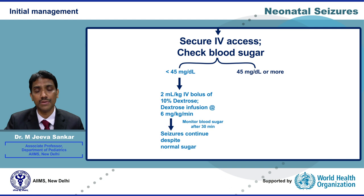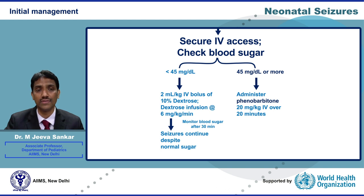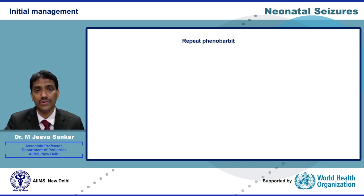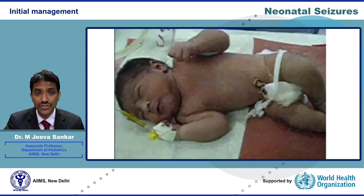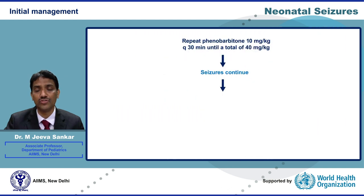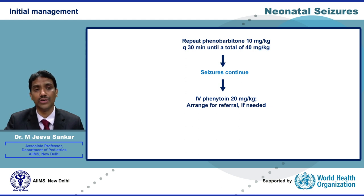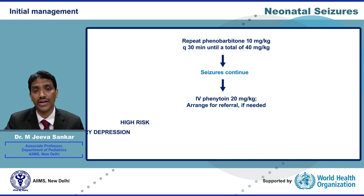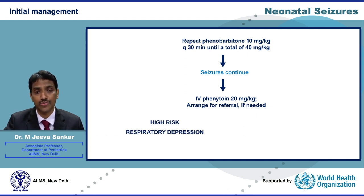If the initial blood glucose is more than 45 mg/dL or seizures continue after hypoglycemia is corrected, provide specific therapy with anti-epileptic drugs. The first-line anti-epileptic drug in neonates is phenobarbitone, administered as a bolus of 20 mg per kg slowly over 20 minutes by intravenous route. If seizures continue, phenobarbitone should be repeated at 10 mg per kg every 30 minutes until a total dose of 40 mg per kg is reached. Neonates requiring these drugs are at high risk of respiratory depression and may require positive pressure ventilation.